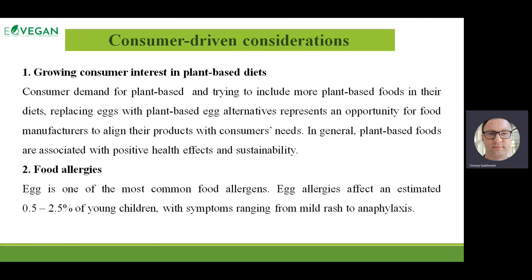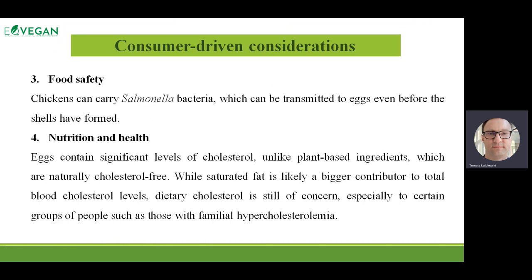Sometimes allergic reactions could be quite dangerous. So this is one of the reasons why people are looking for egg analogs. Then food safety — some animal products are quite a good source of pathogenic bacteria, and contamination from bacteria is quite bigger than in plant products. Plant products could have different hazards, not like salmonella or E. coli, but bacillus or some other bacteria.